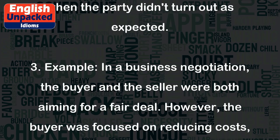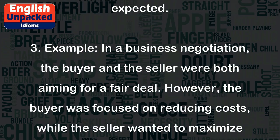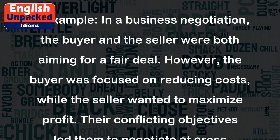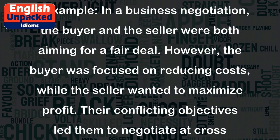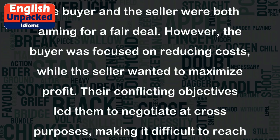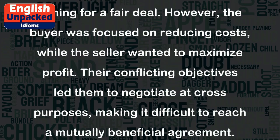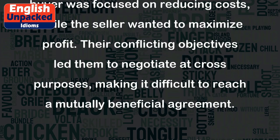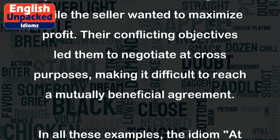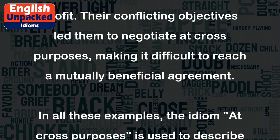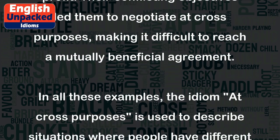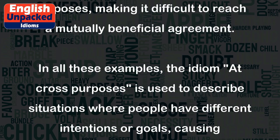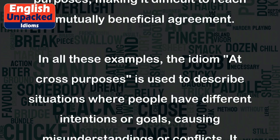Example 3: In a business negotiation, the buyer and the seller were both aiming for a fair deal. However, the buyer was focused on reducing costs, while the seller wanted to maximize profit. Their conflicting objectives led them to negotiate at cross-purposes, making it difficult to reach a mutually beneficial agreement.